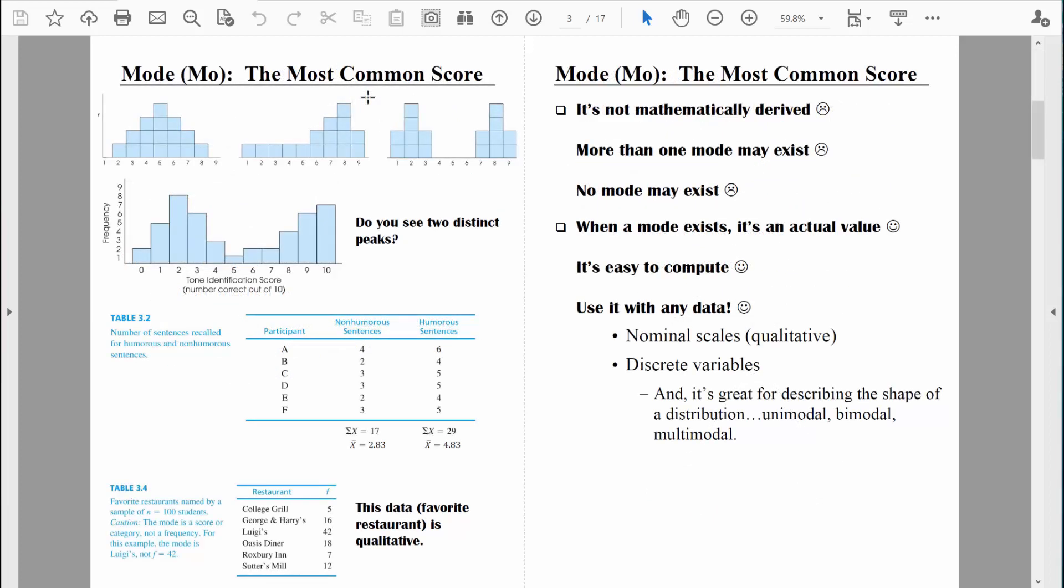The last time we were together, we talked about the mode, which is the most common score. We mentioned that it's a relatively simplistic measure, but it definitely has its time and place. For example, we can use the mode with any type of data, making it incredibly flexible. But it's smart for us to explore other options. So today, let's talk about the median.